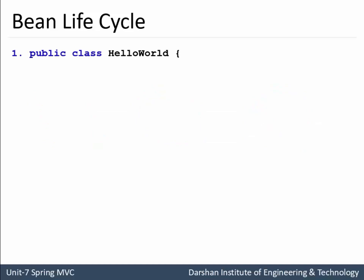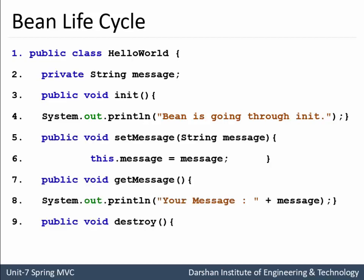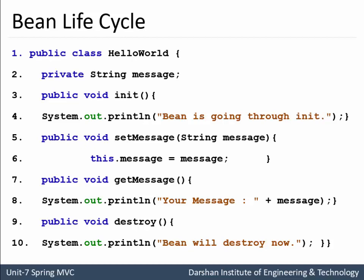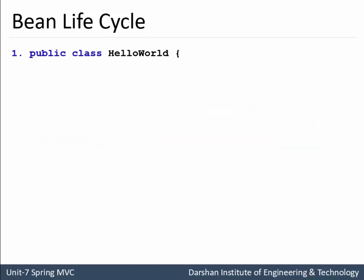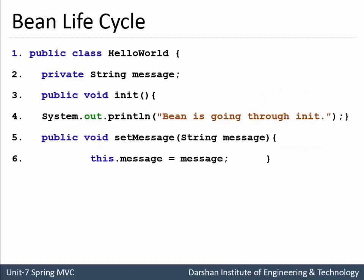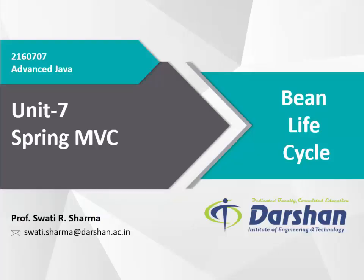Let us check one example of a bean life cycle. We have a public class HelloWorldBean with a string named message. The init method handles initialization, then getter and setter methods, and finally the destroy method. This is the bean life cycle program. Students, if this question is asked in an exam, you need to draw the life cycle of the bean, explain all three stages, and additionally explain it with the help of a simple example. With this I complete bean life cycle. Thank you all.